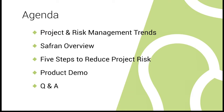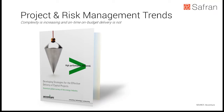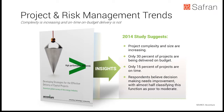Accenture did a study on recent project and risk management trends with really interesting insights. Project complexity and size are increasing, but more critically only 30% of projects are delivered on budget — 70% are over budget — and only 15% of projects are on time, meaning 85% are over duration. Safran Risk provides risk professionals a way to evaluate quantitative risk, including duration and cost, to support better project decisions and identify and mitigate risk earlier throughout the project lifecycle.